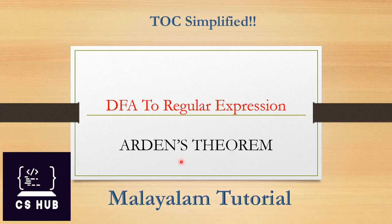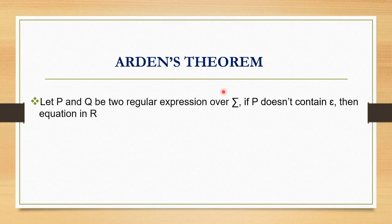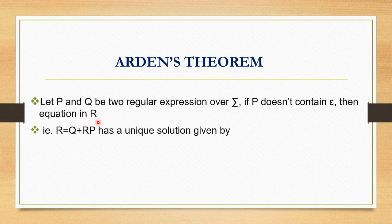Now let's look at the theory. The theorem states: let P and Q be two regular expressions over sigma. If P doesn't contain epsilon, then the equation in R - that is, R is equal to Q plus RP - has a unique solution.